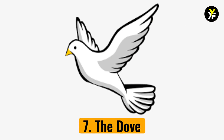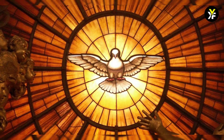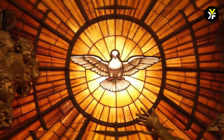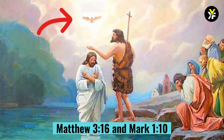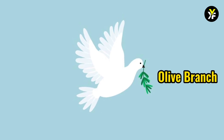Number 7: The Dove. The dove is a white bird that is frequently depicted in the Catholic Church as flying gracefully in front of a shining aura of light. The dove represents the Holy Spirit. When Christ was baptized by John the Baptist, a dove descended on him. As a symbol of peace, the dove is sometimes depicted with an olive branch in its mouth. It also represents God's grace.